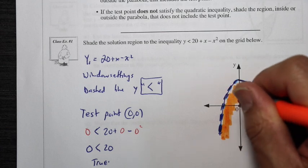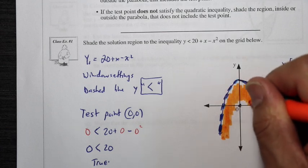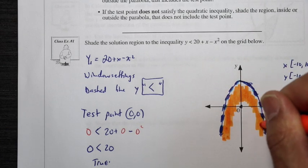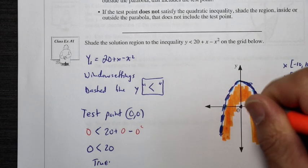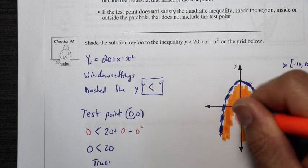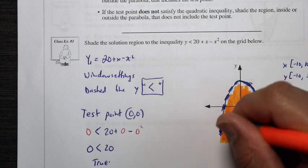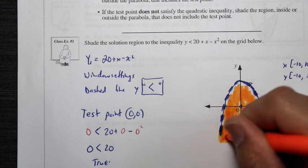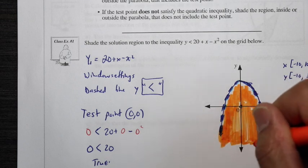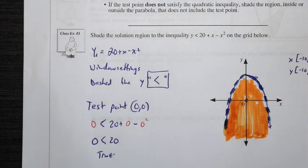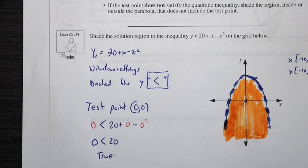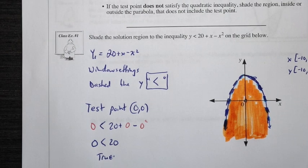So we found that coordinate (0, 0) satisfies the equation — it made it true. Therefore, the spot where the test point is located is part of the solution, so we shade that region. This is the solution region. You're ready for your assignment — I will see you in class.